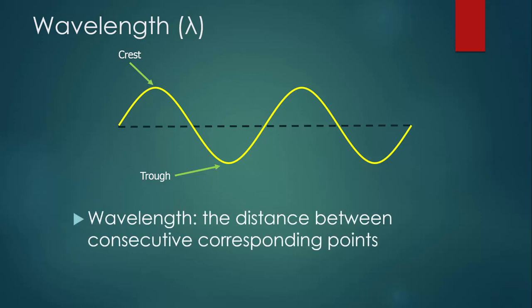So with that terminology in mind, we can say that the wavelength of a wave is the distance between consecutive corresponding points. Wavelength, being a length, is measured in meters. So corresponding points are two points that match. They're identical points on neighboring oscillations in the wave. That's what consecutive means, one right after another.